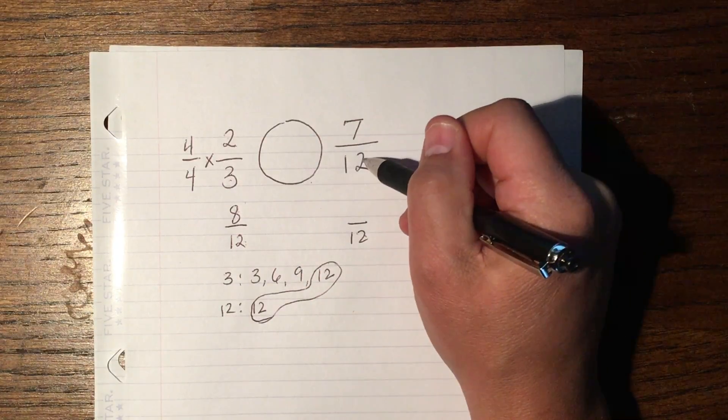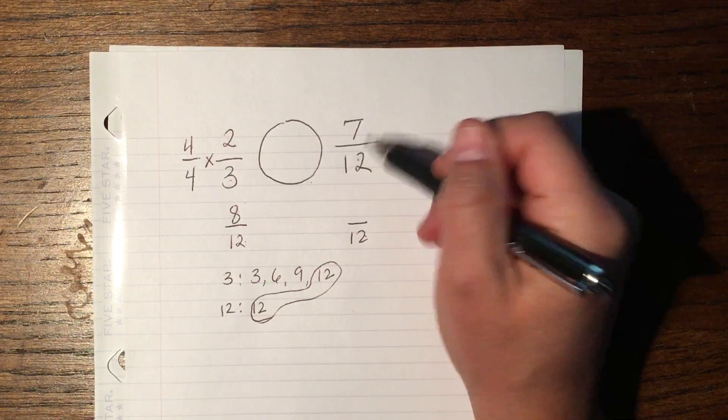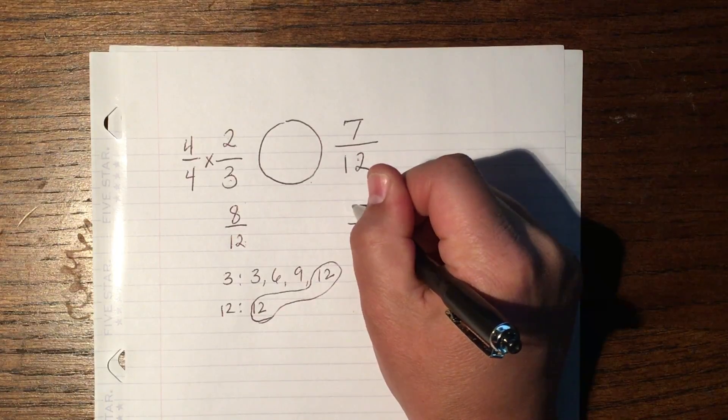Now here, you notice that I started with twelfths and I still have twelfths. So I don't need to change this fraction. This just remains 7.